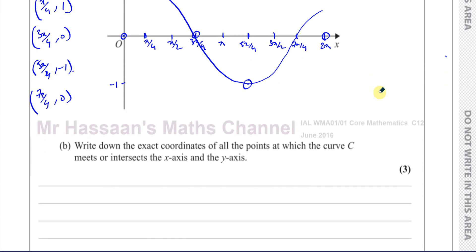The next part of the question says, write down the x coordinates of all the points at which the curve C meets or intersects the x and the y axis. Well, the x axis, we've kind of already got those, the values there. So the x axis, we can say that it's at 3 pi over 4, 0, and also at 7 pi over 4, 0.